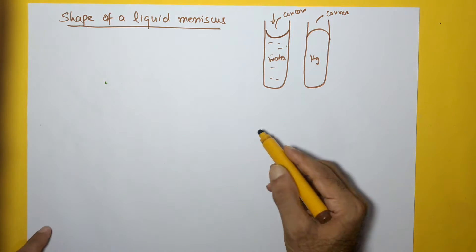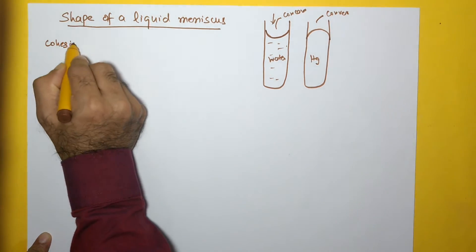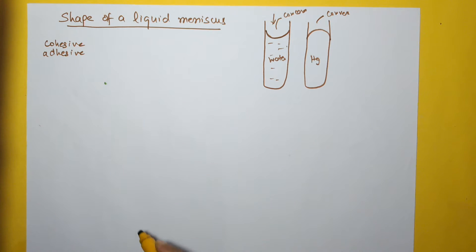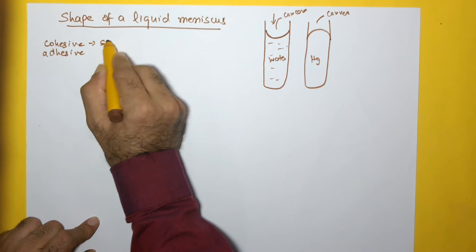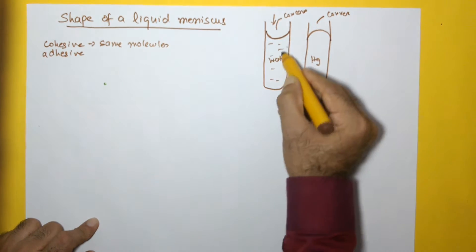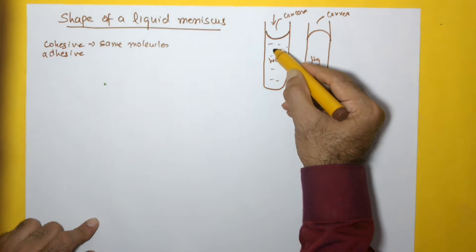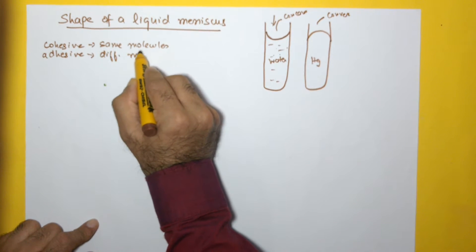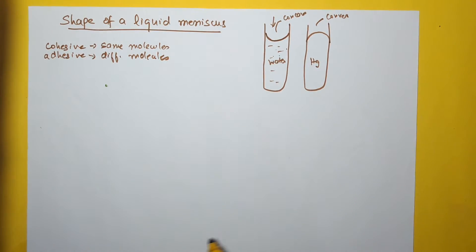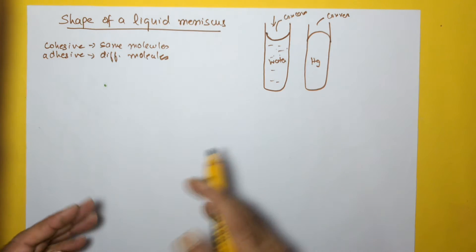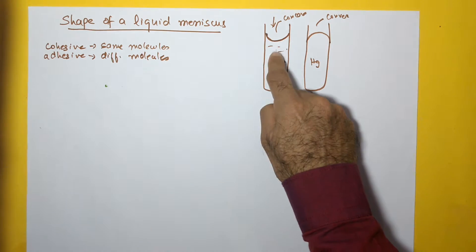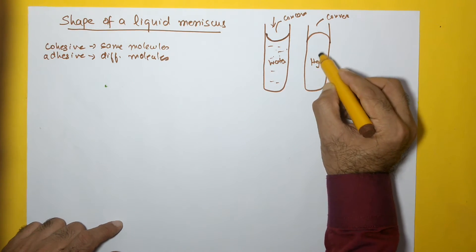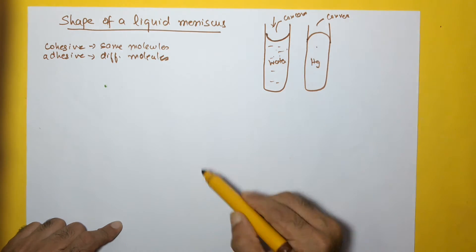The primary reason this happens is because of cohesive forces and adhesive forces. Cohesive forces are the forces between same molecules — for example, the intermolecular forces between water molecules are cohesive forces. Adhesive forces are between molecules of different substances in contact with each other. So here, water is in contact with glass, so the intermolecular forces between molecules of water and glass are adhesive forces. The same applies for mercury: forces between mercury molecules are cohesive, and forces between mercury and glass are adhesive.